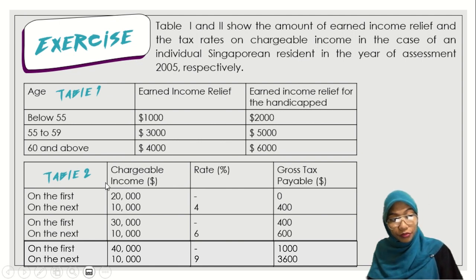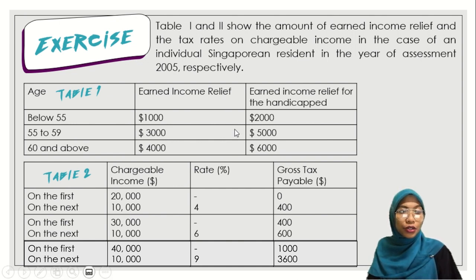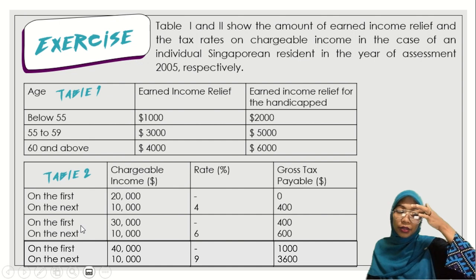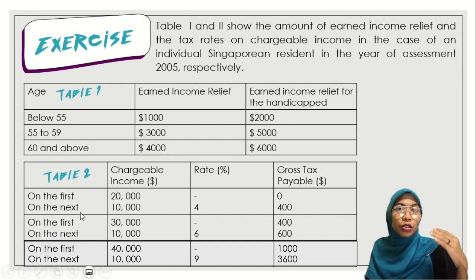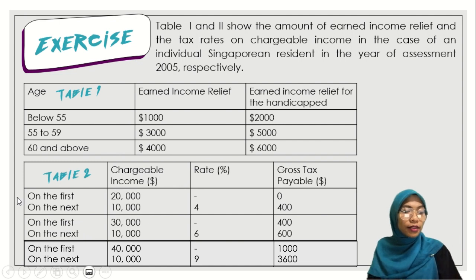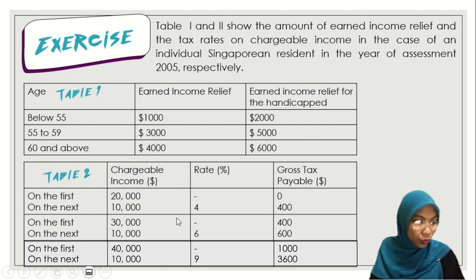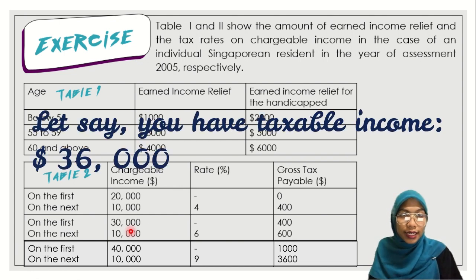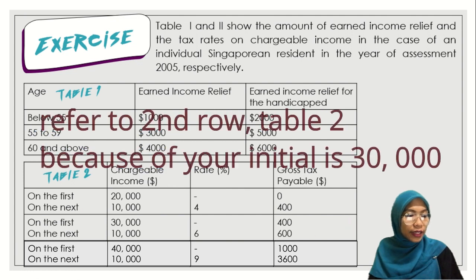For table two, it is about the tax rate on chargeable income. Once you have calculated your income deducted by income relief and obtained the chargeable income amount, you need to look at which row you fall into. For example, if you have $24,000 you refer directly to that row. If you have $36,000 you are in the second row.